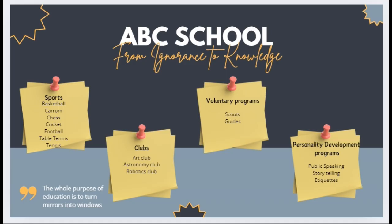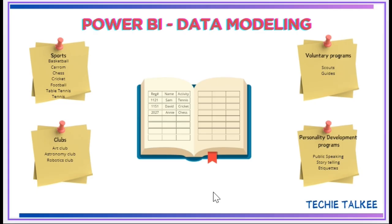These are the different dimensions that the school is looking at for the students. Each student can opt for whichever activity he or she wants. So the school administration will maintain a register where they'll make note of the student details along with the extracurricular activities that they have opted for. David has opted for the cricket class and Annie has opted for the chess class.